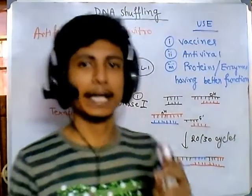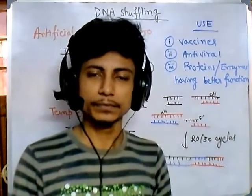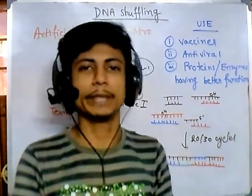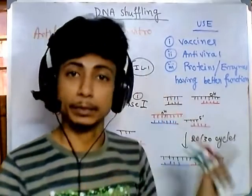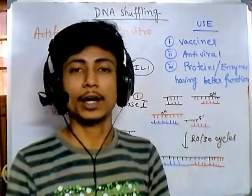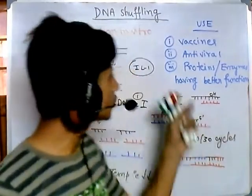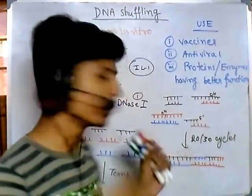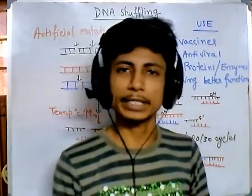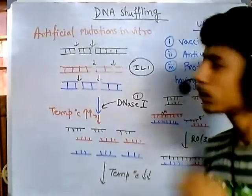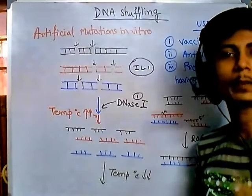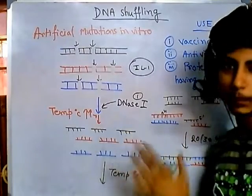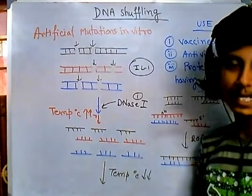This is the way to enhance the activity of particular proteins like enzymes, or effective molecules like interleukin-1 for reacting against viruses, and also to produce different types of vaccines. DNA shuffling is a blessing for molecular biologists nowadays and can be used for many purposes to produce better quality products. That's it, guys — thank you.